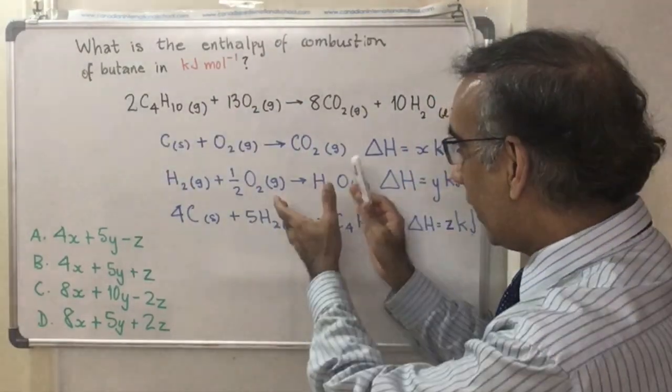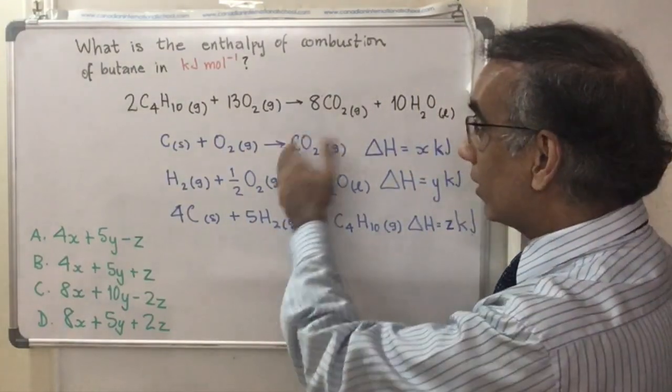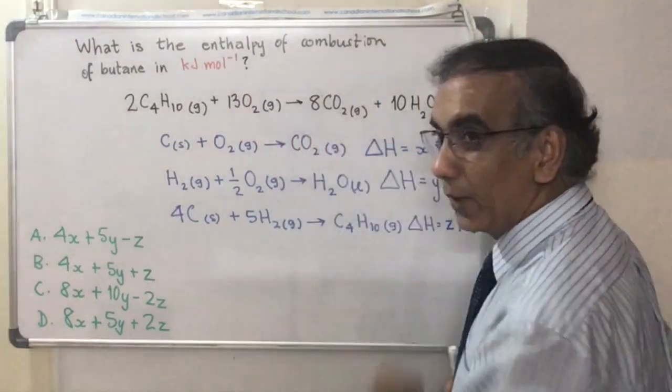So there are two things you can do. You can go ahead and do the cancellation method and then divide the final answer by two, or you can start off by dividing this equation by two.